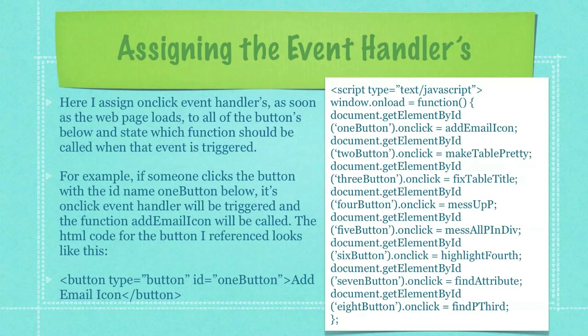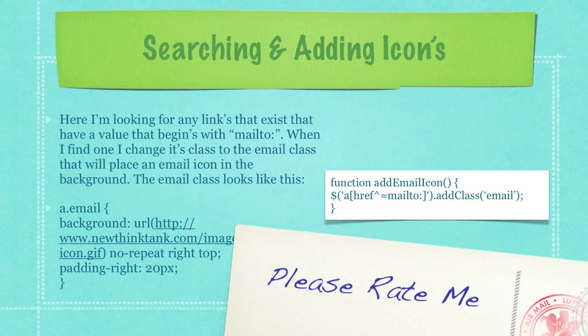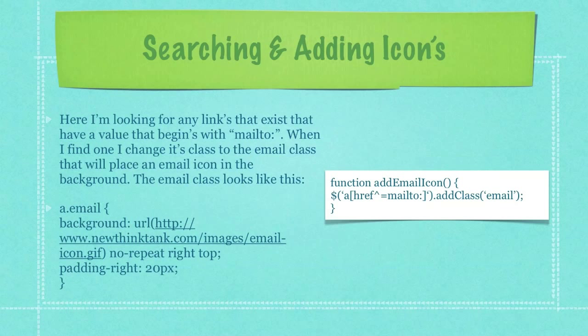The HTML code for that button you can see here in the third bulleted item in your lower left-hand side of your screen. Here I'm looking for any links that exist that have a value that begins with mail2, and when I find one, I change its class to the email class, which will place an email icon in the background. The email class looks like this if you can't remember from before.